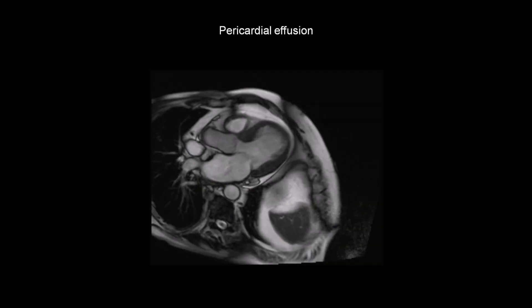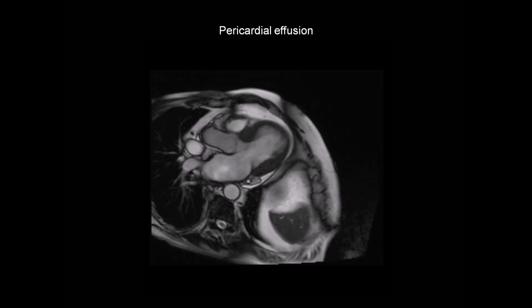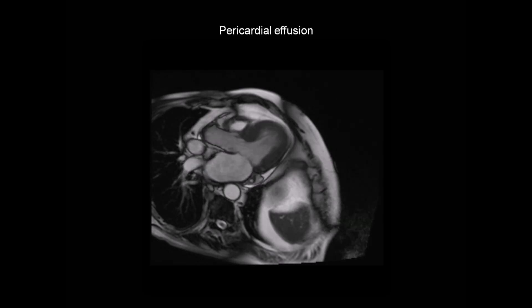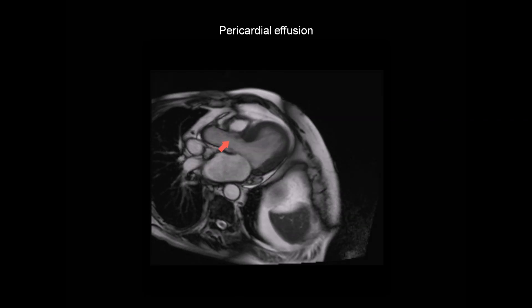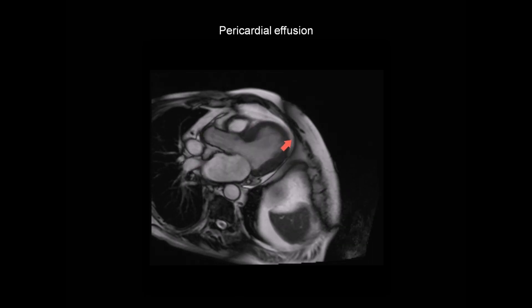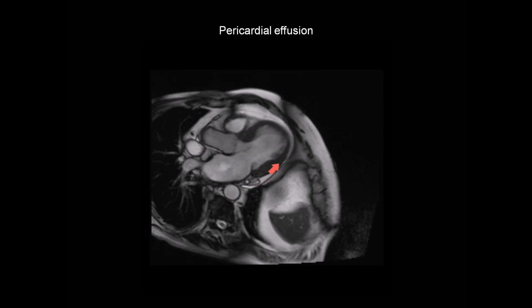Another feature seen in cardiac amyloidosis is the presence of a pericardial or sometimes a pleural effusion. This is a cine CMR three-chamber view showing the left ventricle, left atrium, aortic valve, and aortic root. And we can see evidence of a relatively small pericardial effusion present.